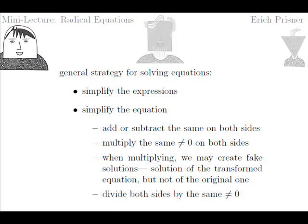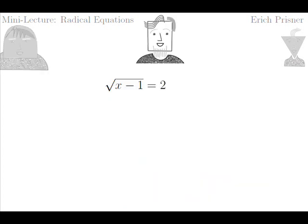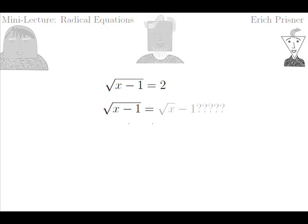What about division? Dividing means multiplying by its reciprocal, so yes, this is allowed too, as long as we don't try to divide by zero. So what about the equation square root of x minus one equals two? How would we simplify it? Would adding, subtracting, multiplying, or dividing help?